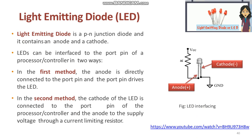LEDs can be interfaced to the port pin of a processor or controller in two ways. In the first method, the anode is directly connected to the port pin and the port pin drives the LED. The port pin sources current to the LED when the port pin is at logic high. In the second method, the cathode of the LED is connected to the port pin of the processor or controller and the anode to the supply through a current limiting resistor. The LED is turned on when the port pin is at logic low. Here the port pin sinks current.